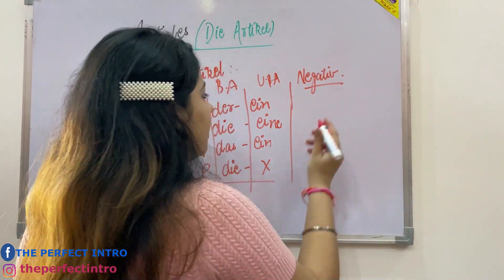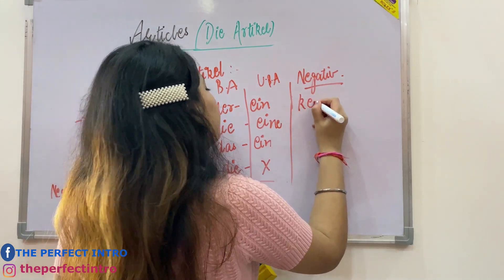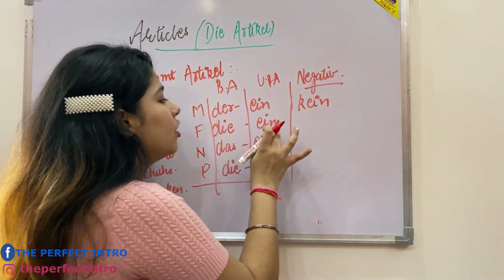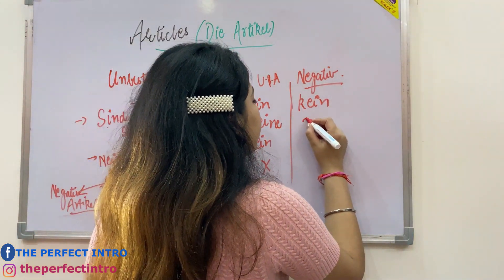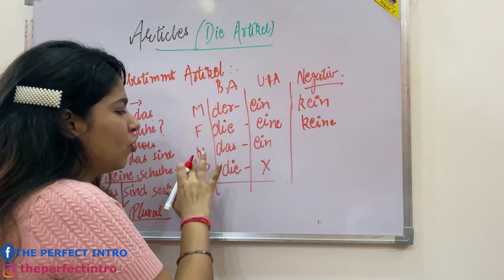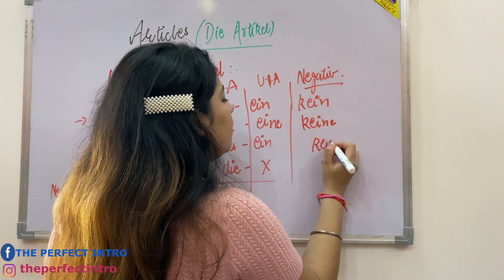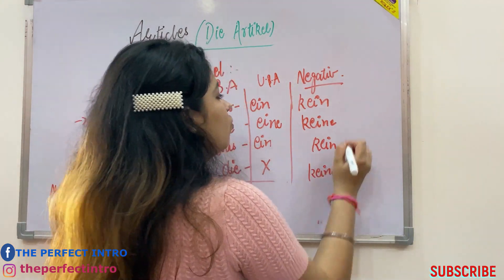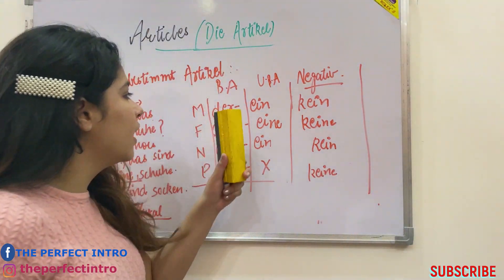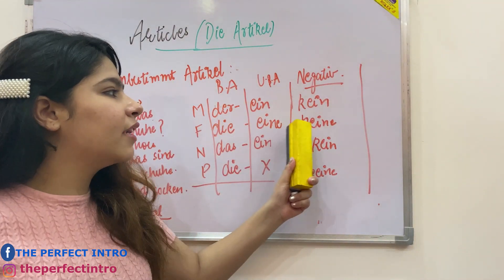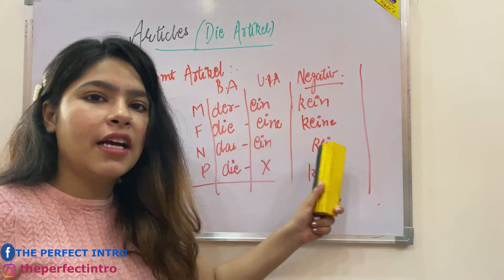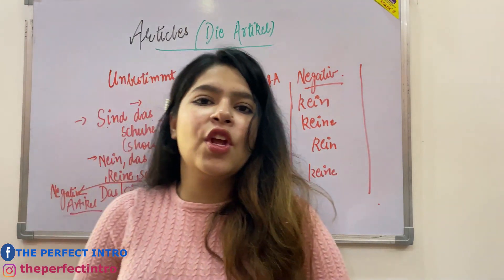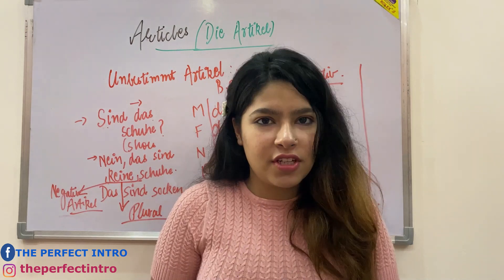So what we have learned: for negative articles, 'der' (masculine) changes to 'kein', 'die' (feminine) changes to 'keine', 'das' (neutrum) stays as 'kein', and plural is also 'keine'. So it is very easy: 'eine'→'keine', 'eine'→'keine', 'ein'→'kein', and then 'keine' for plural. This is what we have done today for negative articles.